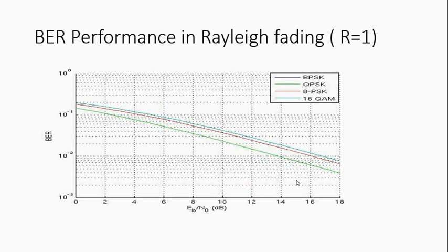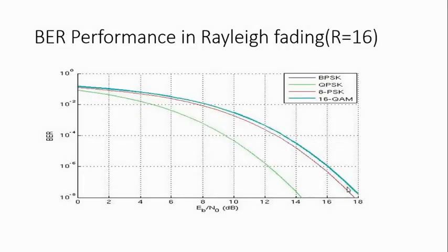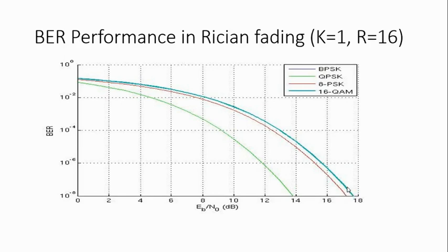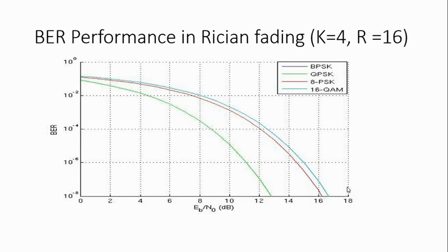This curve gives the performance of different modulation techniques in presence of Rayleigh fading where diversity order is 1. When the diversity order is increased to 16, the performance of different modulation techniques improves as they need lesser Eb/N0 ratio. This plot shows the BER performance in Rayleigh channel when the diversity order is 16 and the Rician factor is 1. Comparing this with the graph where the Rician factor is increased to 4, it can be seen that the performance of modulation techniques improves further and they need lesser Eb/N0 ratio.